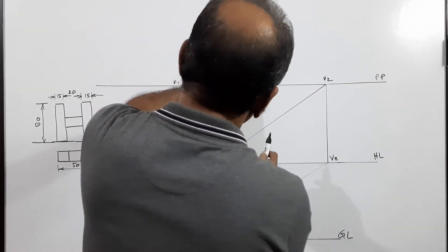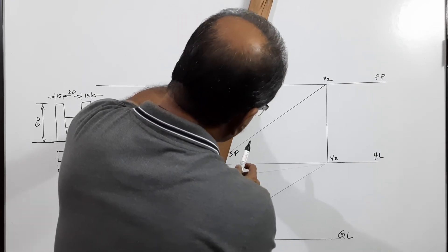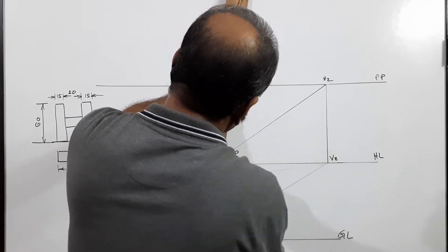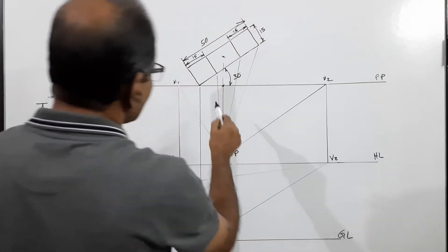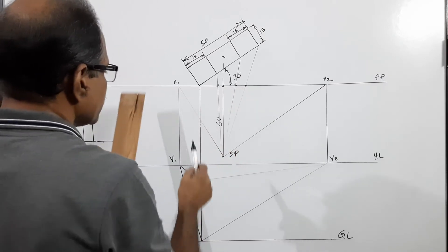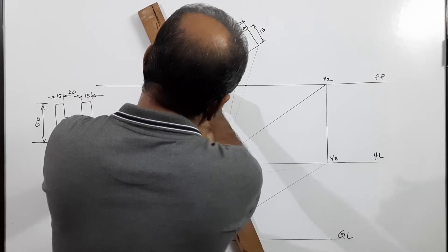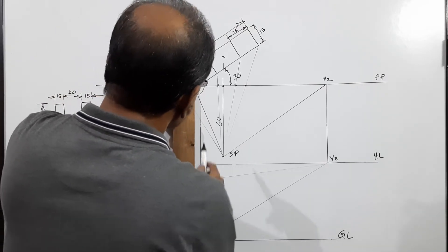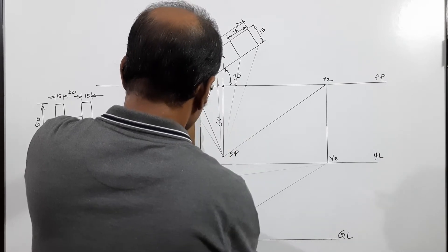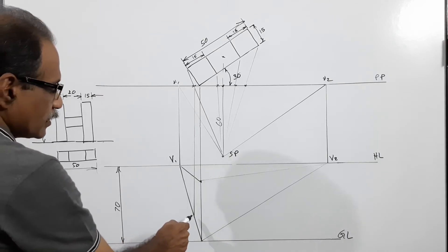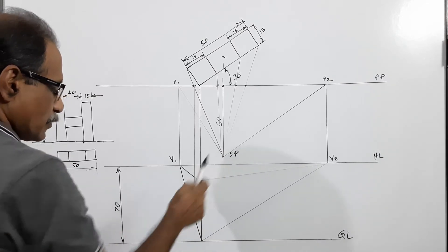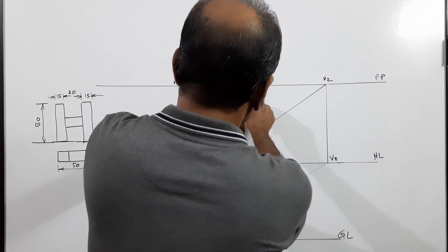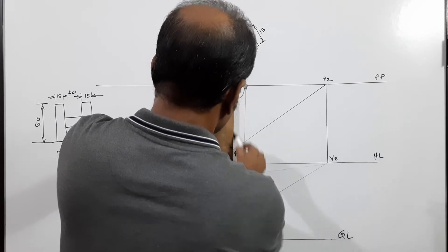Now I am going to find the intercepts of these points. Intercept of this — there. Intercept of this — there. Intercept of this — there. I have got three intercepts. Then intercept of this one. Drop this intercept down, then drop the remaining intercepts down as well.